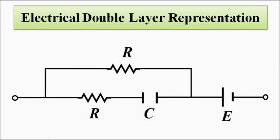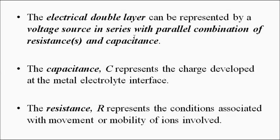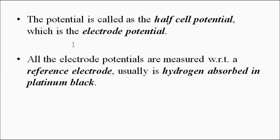The simplest representation of this electrical double layer consists of a voltage source representing the double layer potential, in series with a parallel combination of resistance and capacitance. The capacitance represents the charge developed at the metal-electrolyte interface, and the resistance represents the conduction properties — specifically the mobility of ions and how easily biosignals can conduct through this charge layer to reach the electrode.